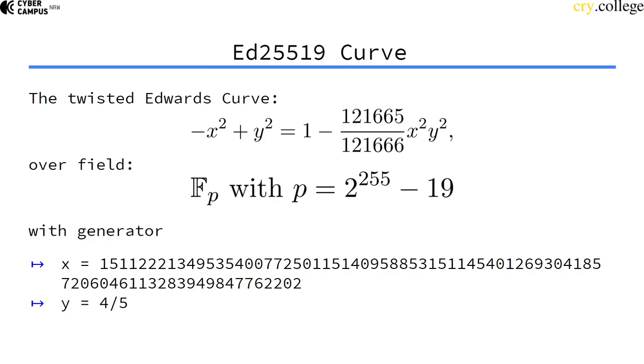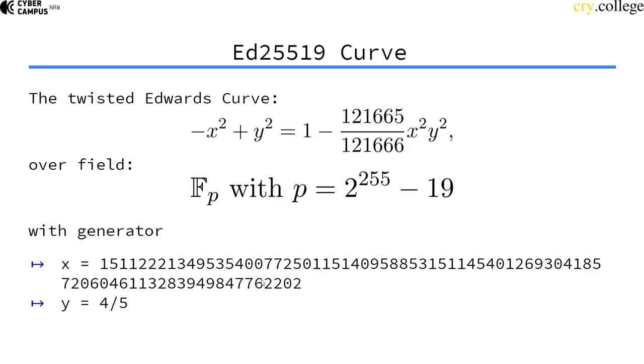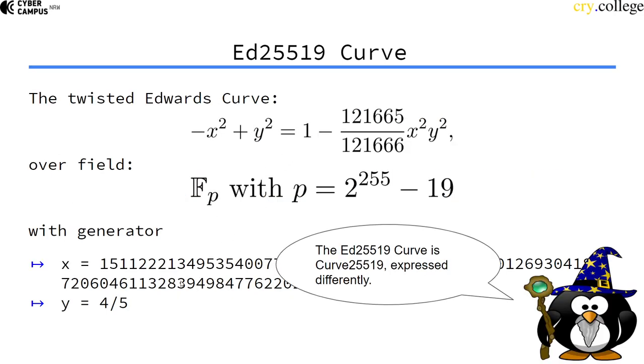So the twisted Edwards curve of this form, where a is minus 1 and this is d, over the same field as 2 to the power of 255 minus 19, with the original generator from curve 25519 mapped onto the Edwards curve here, is actually what we refer to as ED25519.